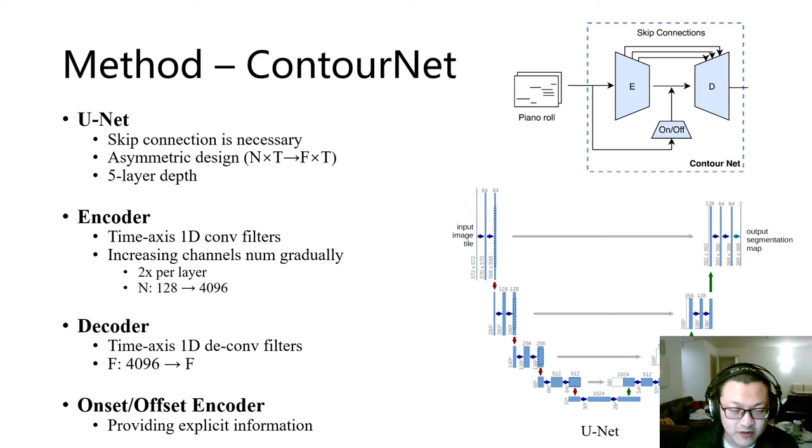U-Net was first proposed for medical image segmentation, and contains a progressively expanding encoder and progressively compressing decoder. The encoder and decoder are not symmetric, because the dimension of piano-roll and spectrum are not equal. The encoder contains 1D convolutional layers along the time axis. Each layer augments the feature map size by twice the size of the previous layer, and the height of the final feature map is expanded from N dimensions to 4096 dimensions.